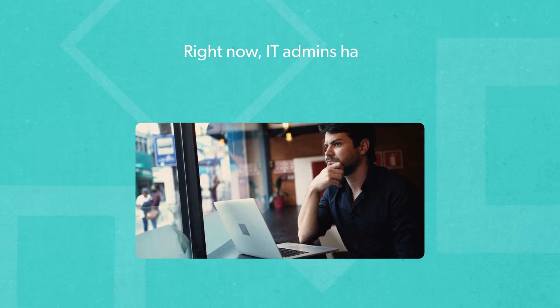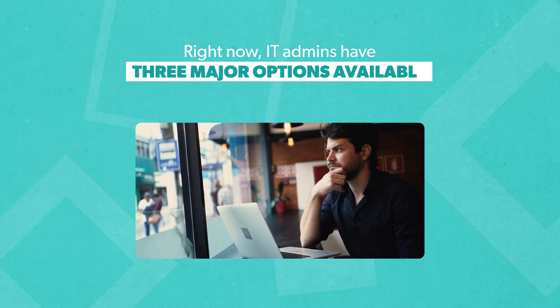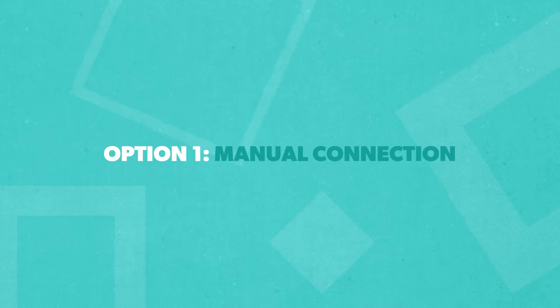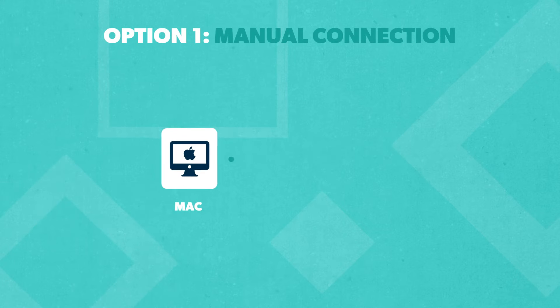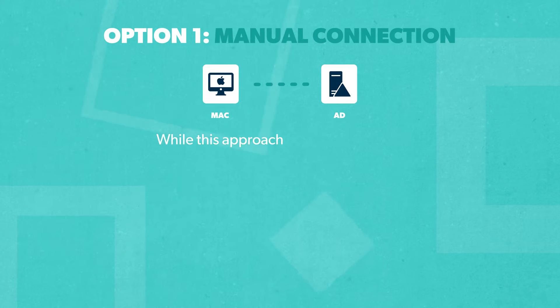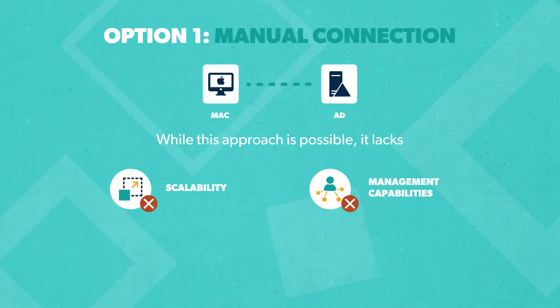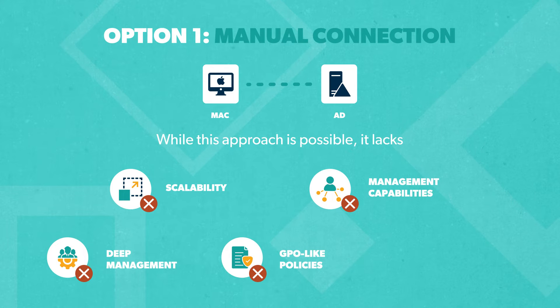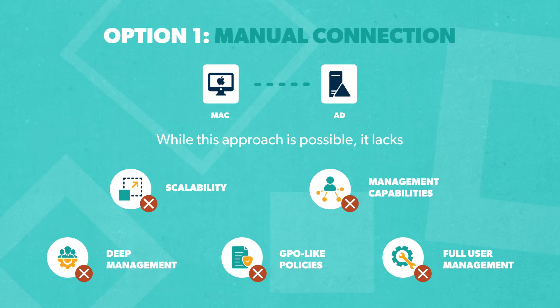Right now, IT admins have three major options available for integrating Macs with Active Directory. Option 1 is a manual connection, where Macs are individually configured to connect with AD. While this approach is possible, it lacks scalability and comprehensive management capabilities. Deep management, GPO-like policies, and full user management features remain absent.